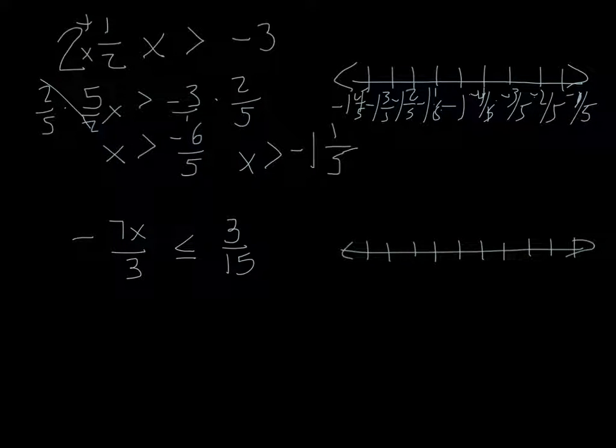So since this is a greater than with no or equal to on it, I would have an open circle on that. So this would be an open circle over the negative one and one fifth. The greater than symbol means we're going to look for the values that are greater than negative one and one fifth. So my arrow would go off in this direction like this.